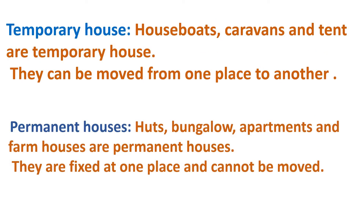We have known about two types of houses. In temporary houses — houseboats, caravans and tents are temporary houses. They can be moved from one place to another. Whereas permanent houses — huts, bungalows, apartments and farmhouses are permanent houses. They are fixed at one place and cannot be moved.